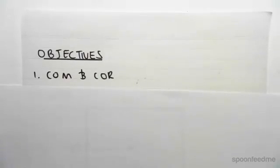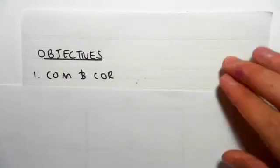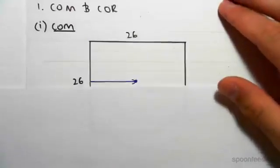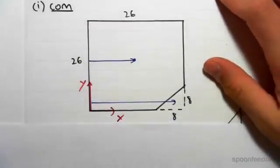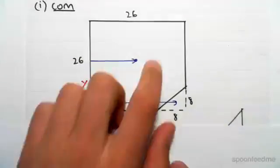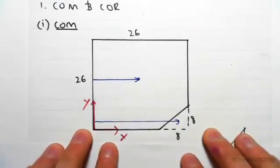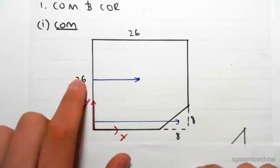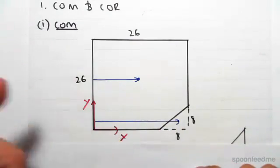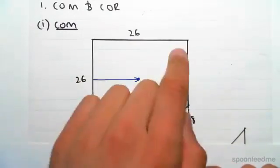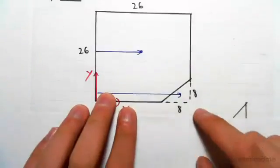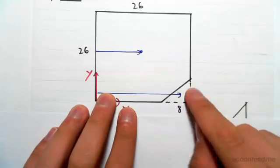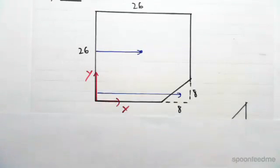The objective of this video is to find the center of mass and center of rigidity for our structure. First, the center of mass. This is our floor plan — it's 26 by 26. I did 8 plus 10 plus 8 which gives us 26 by 26. The triangle cutout is 8 by 8 over there.